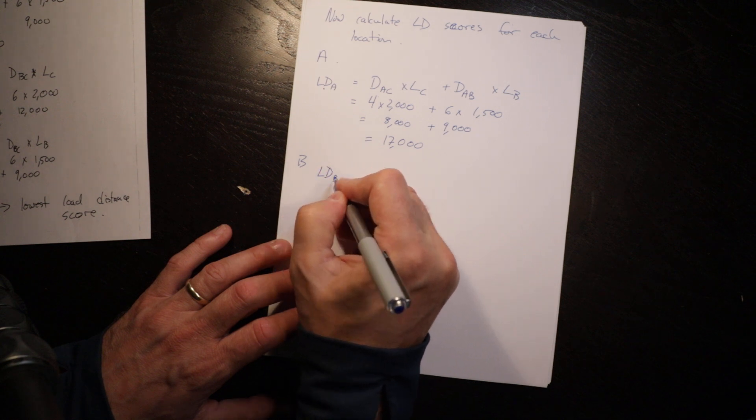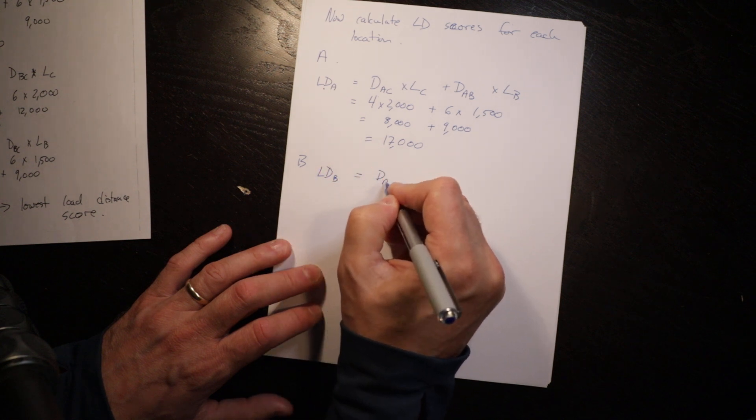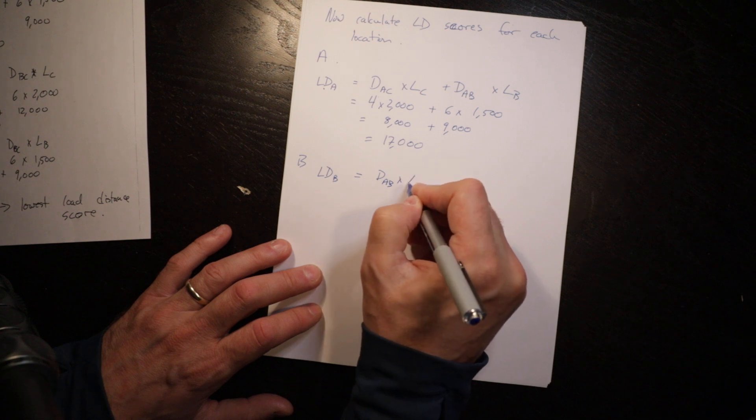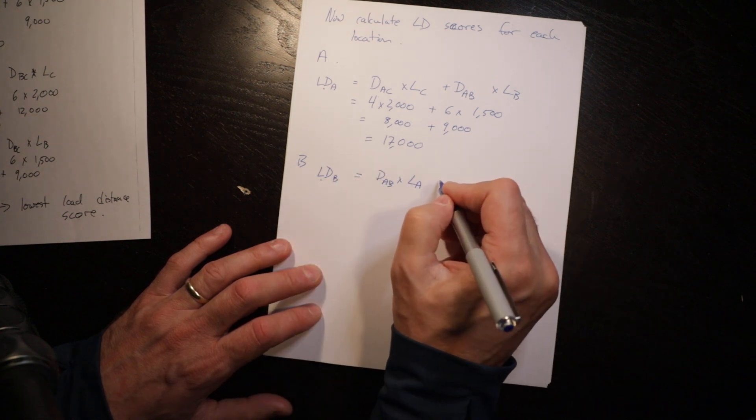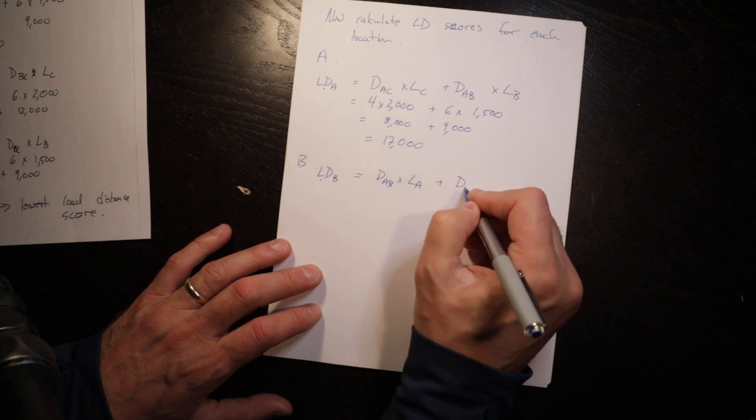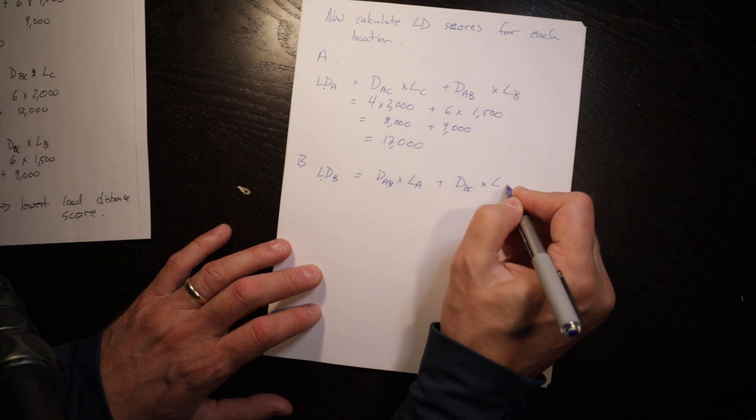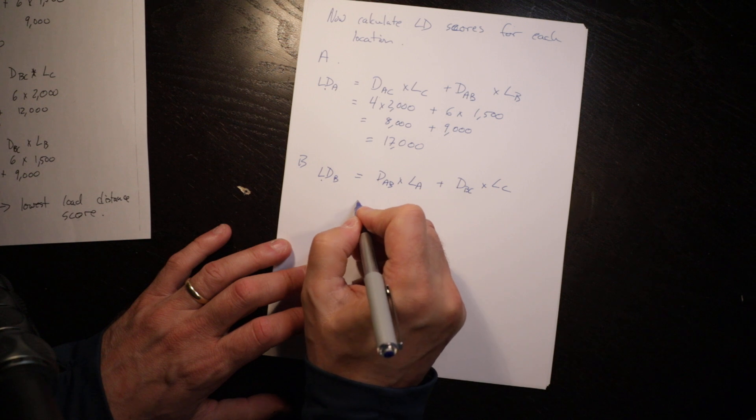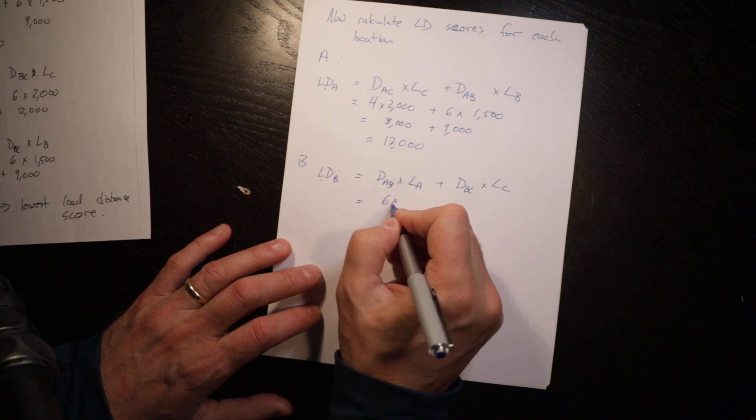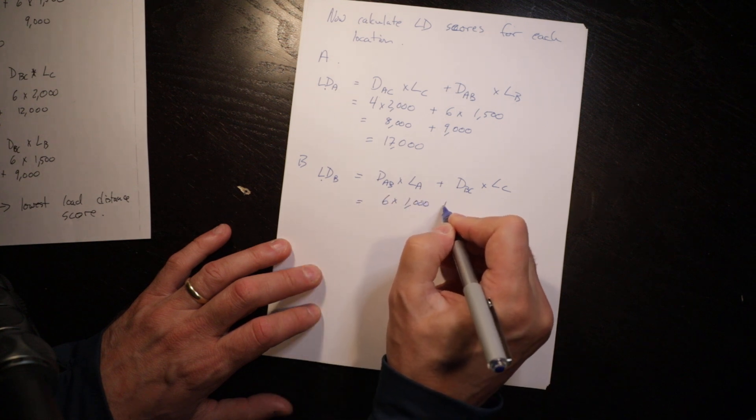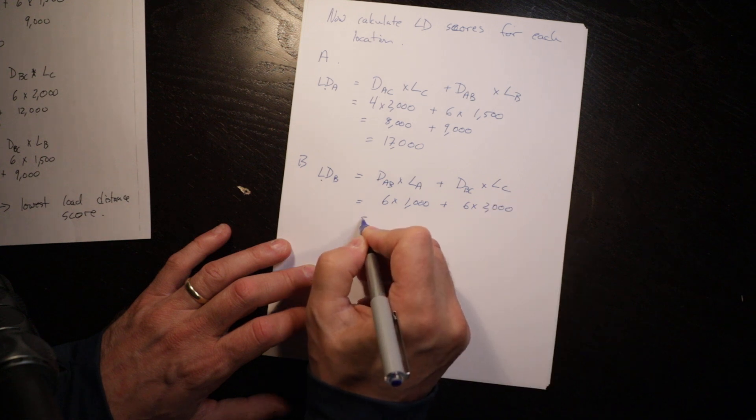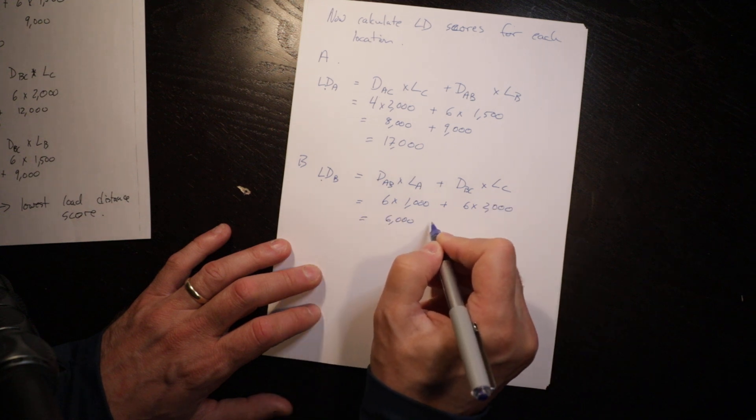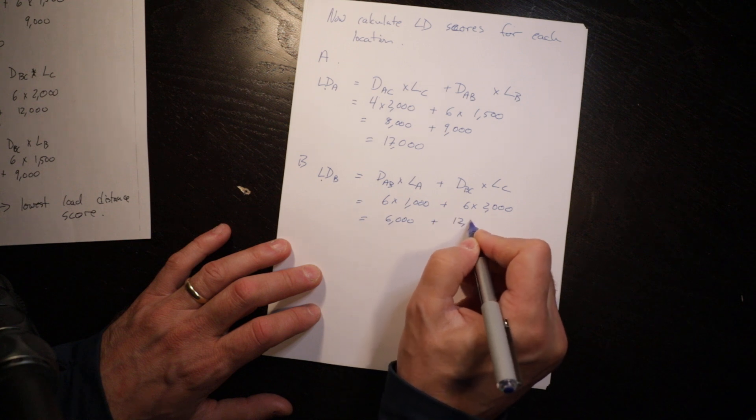Load distance B equals distance from A to B times the load of A, because it is A that is going to B, plus distance B to C times the load for C, which equals 6 times 1,000 plus 6 times 2,000, equals 6,000 plus 12,000, equals 18,000.